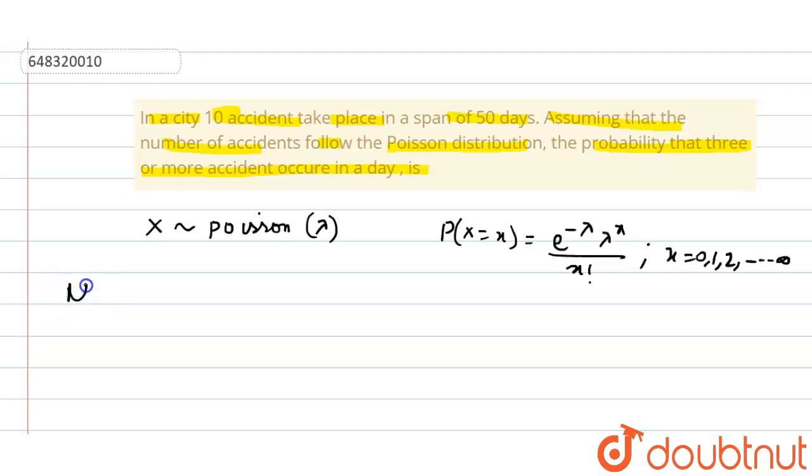Now we find the value of mean, so mean lambda equals 10 by 50, that is 0.2.